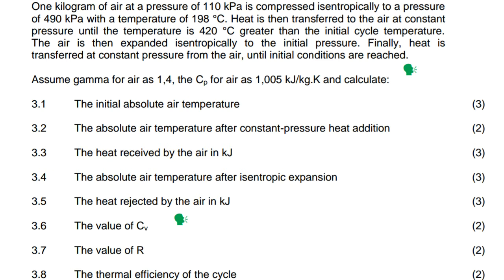1 kg of air at a pressure of 110 kPa is compressed isentropically to a pressure of 490 kPa, with a temperature of 198 degrees Celsius. Heat is then transferred to the air at constant pressure until the temperature is 420 degrees Celsius greater than the initial cycle temperature. The air is then expanded isentropically to the initial pressure. Finally, heat is transferred at constant pressure from the air until initial conditions are reached. Assume gamma for air is 1.4, and the specific heat capacity at constant pressure is 1.005 kJ/kg·K.